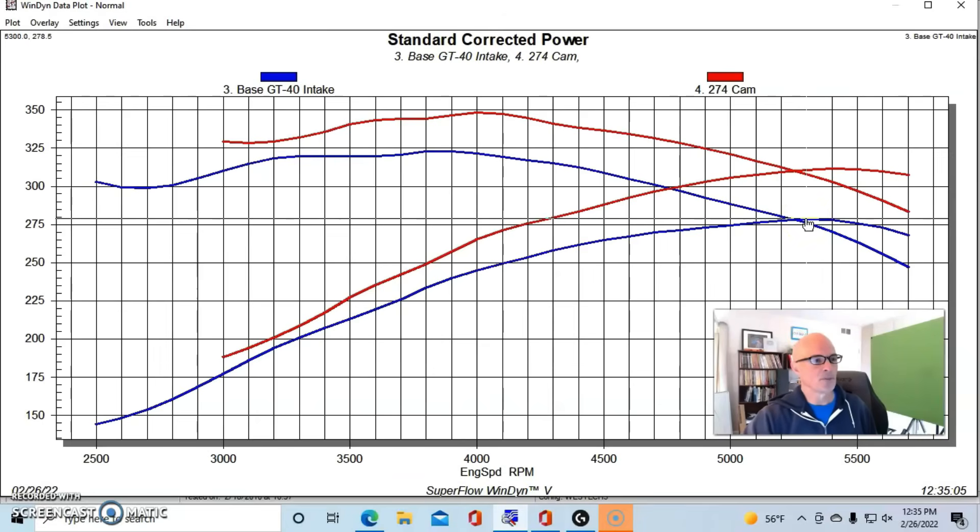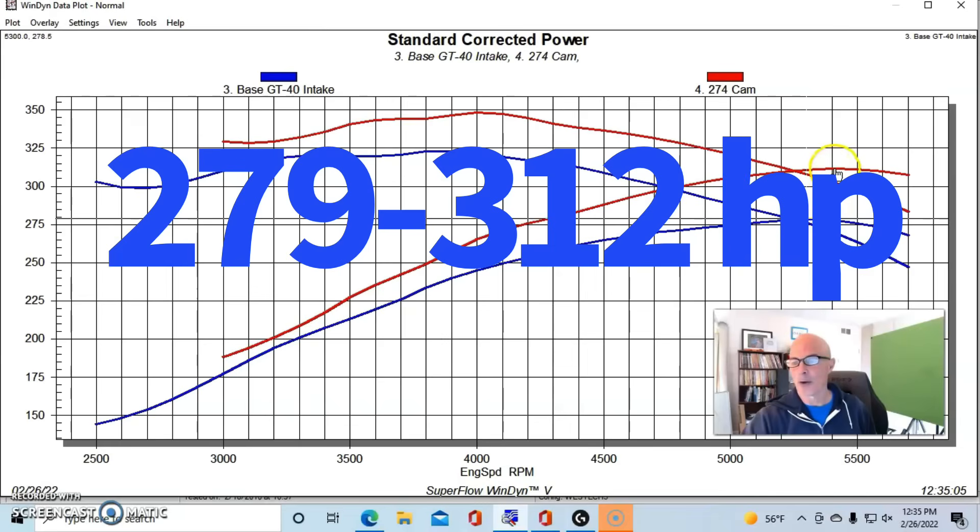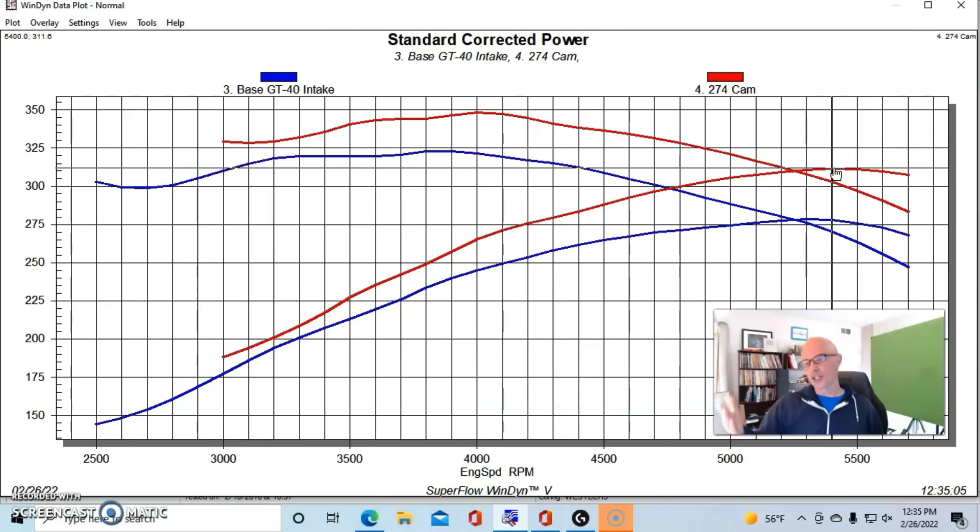Going from the factory HO camshaft to the Xtreme Energy 274, the power jumped up from 279 horsepower to a peak of 312 horsepower. I know that we also increased the engine speed where the motor made peak power, but not by a lot. We didn't shift it by like a thousand RPM.